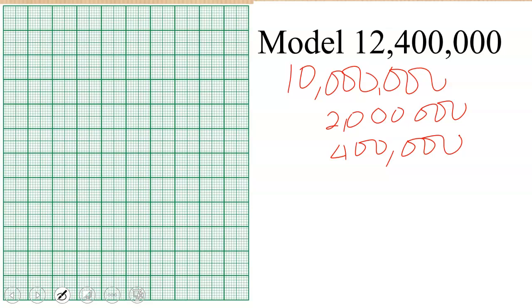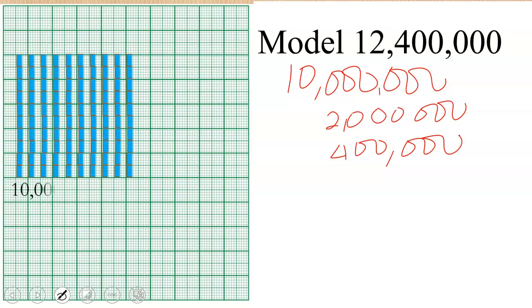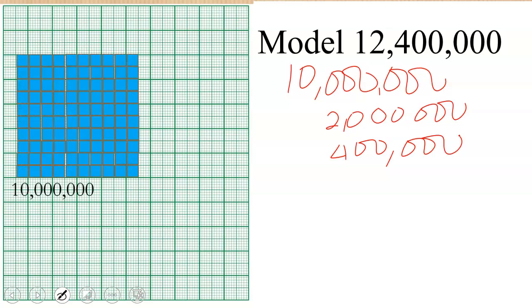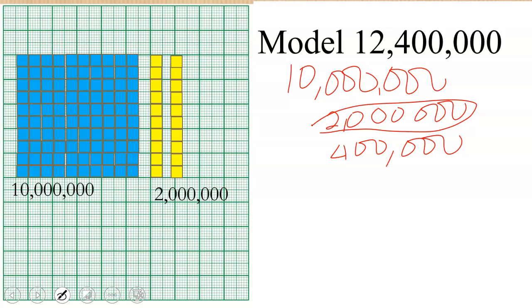So this will be our 10 million because that's what we said - if we have the longs up to 10 we get 10 million. In that case we need to model our 2 million. So we're talking about 10 million plus 2 million plus 400,000. So we need four of the small ones to give us 400,000.